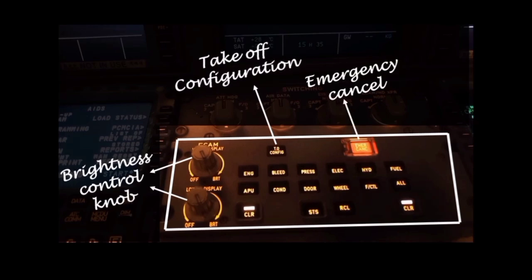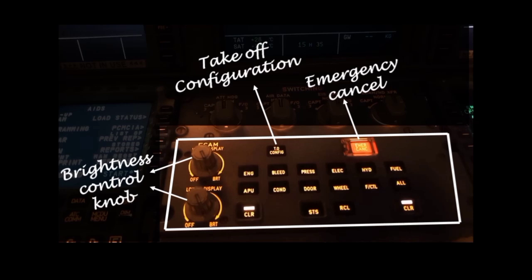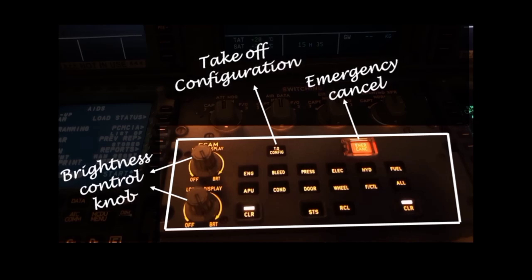This is the emergency cancel key, which is used to cancel aural warnings and extinguishes the master warning light. It can also cancel the present caution indication including the single chime, master caution light, and ECAM message.